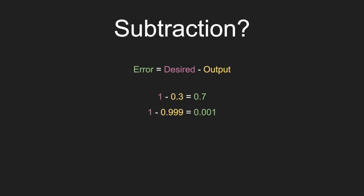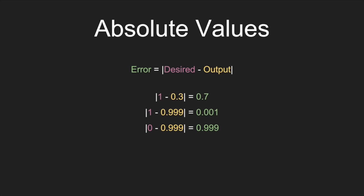There is a slight problem with this measure of error: using subtraction gives you the difference between two numbers, but that difference might be positive or negative. If we desired an output of 0 and we got 0.999, that would be a negative error, which actually looks like less error than the others even though 0 and 0.999 are really far from each other. So we don't ever want this to be negative — we basically just want to ignore the minus sign and use the absolute value to get the distance, which always gives us a positive number.